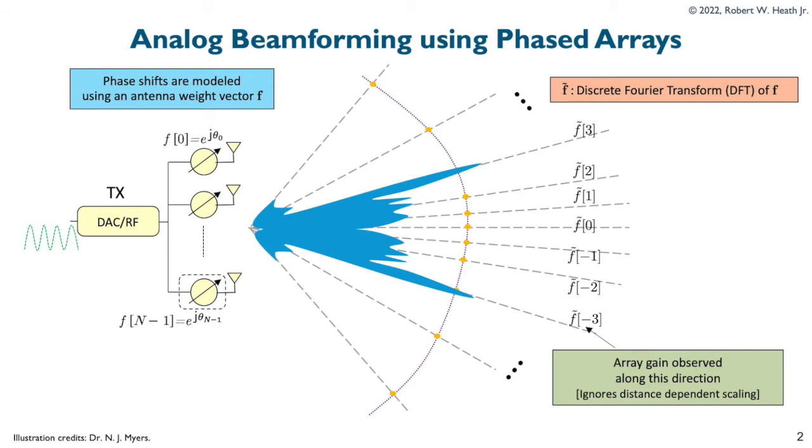Before going into the details, here is a brief overview of beamforming for millimeter-wave communications. In phased arrays, also known as analog arrays, the transmitter controls the phase of the phase shifters at each antenna element, and the choice of these phases define a beamforming vector. The discrete Fourier transform of this beamforming vector characterizes the array gain observed along different directions. In this presentation, we use F for the beamformer and F tilde for the array gain along on-grid directions. Note that usually either analog or hybrid antenna arrays are used for millimeter-wave communication, but we use analog arrays or phased arrays for explanation in this presentation.